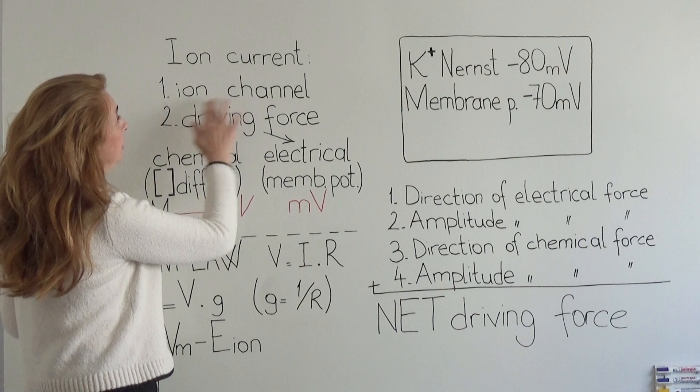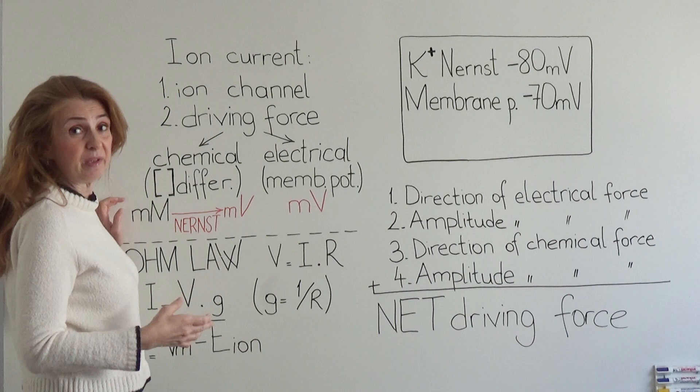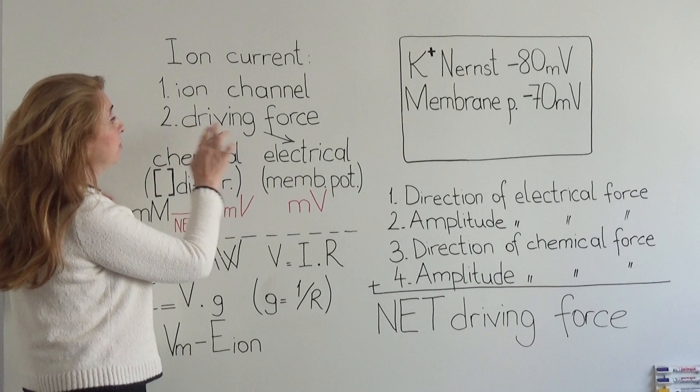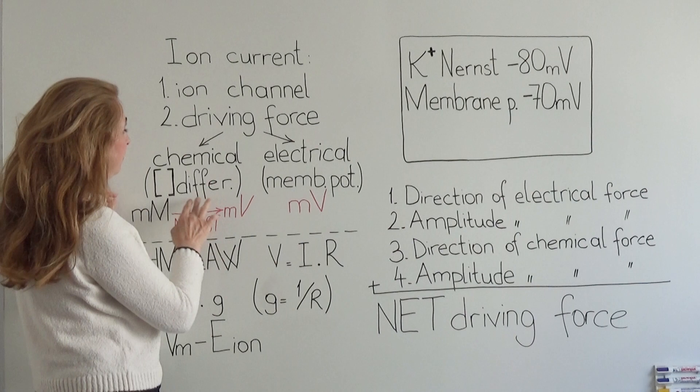First one is that we need to have an ion channel in the membrane because ions are not able to pass through the lipid part of the membrane. The second is that we need a driving force that's going to push the ions to pass through the channel.